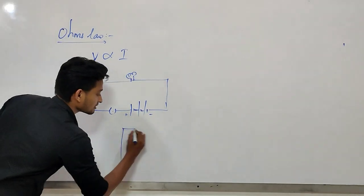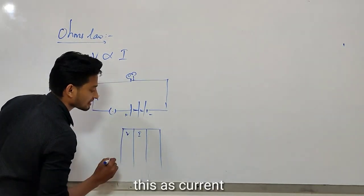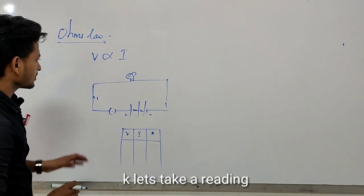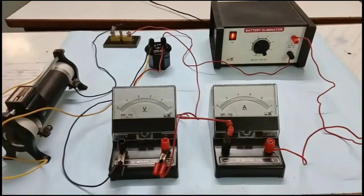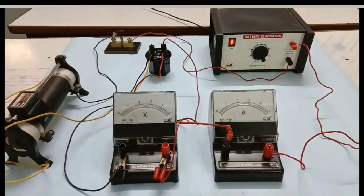Let's set up the table. First column: potential difference. Second: current I. Third: resistance R. For the verification, we have a battery in series connection, an ammeter, an unknown resistance, a rheostat, and a key. We connect a voltmeter in parallel. We take the maximum turns to the right, then reduce resistance to the left.